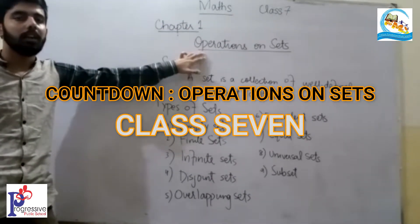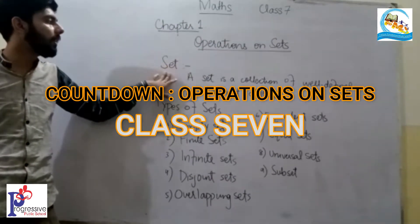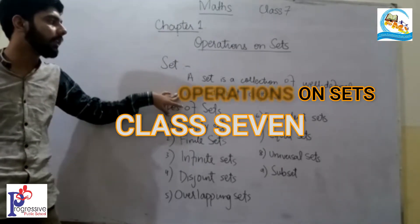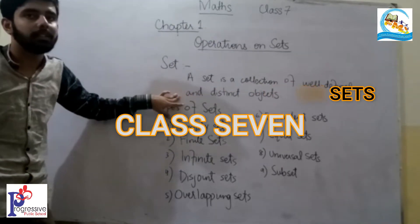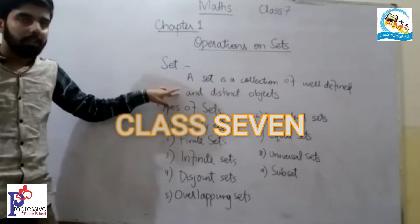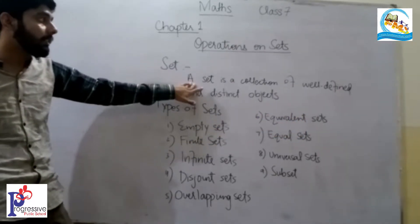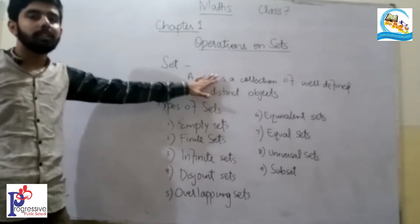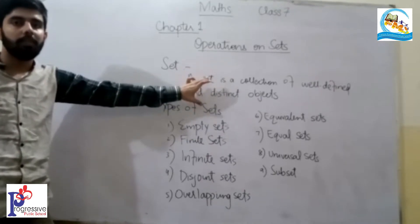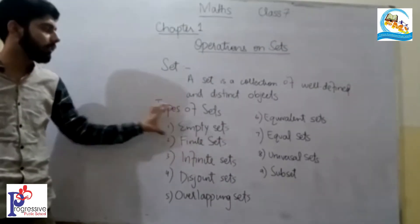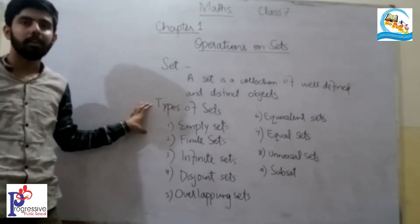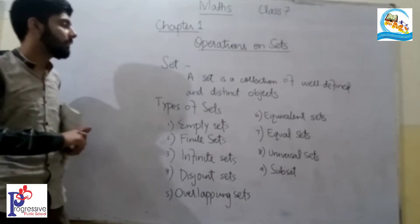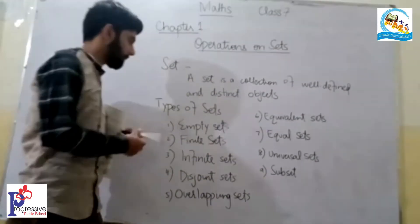Operations on Sets. We have to know what sets are. A set is a collection of well-defined and distinct objects. Well-defined means properly defined — any set whose objects are properly defined is called a well-defined set.